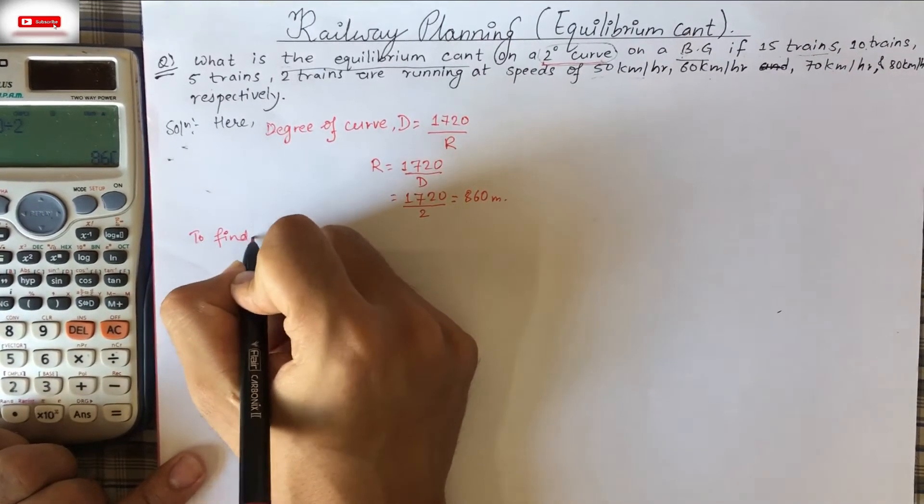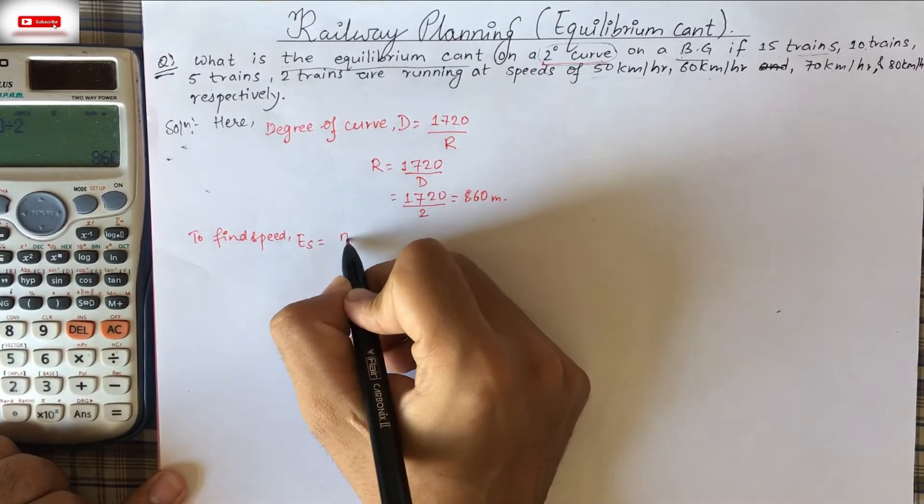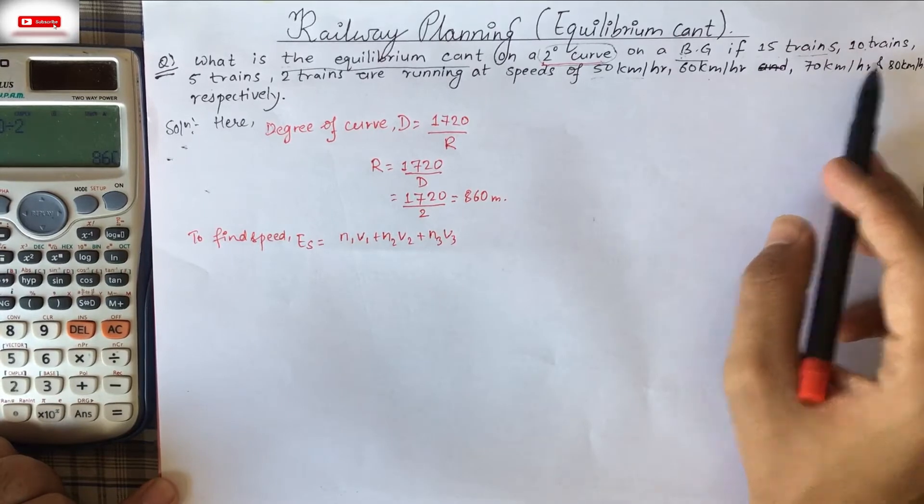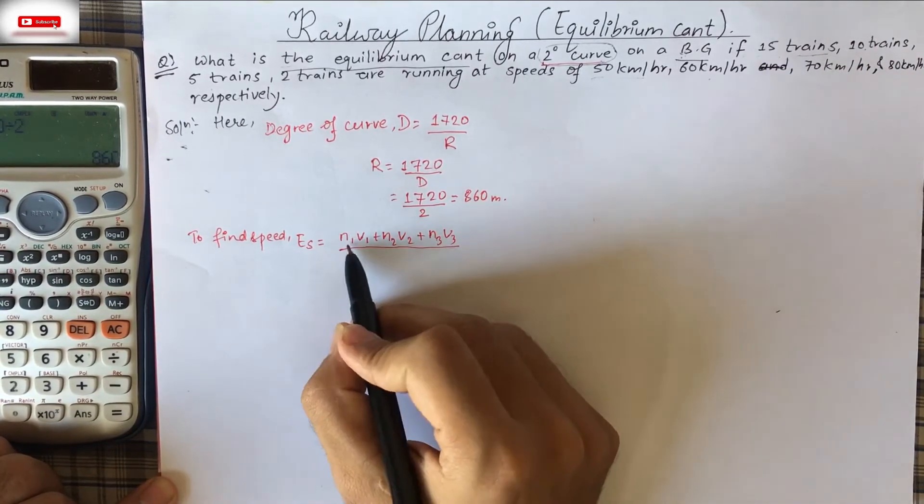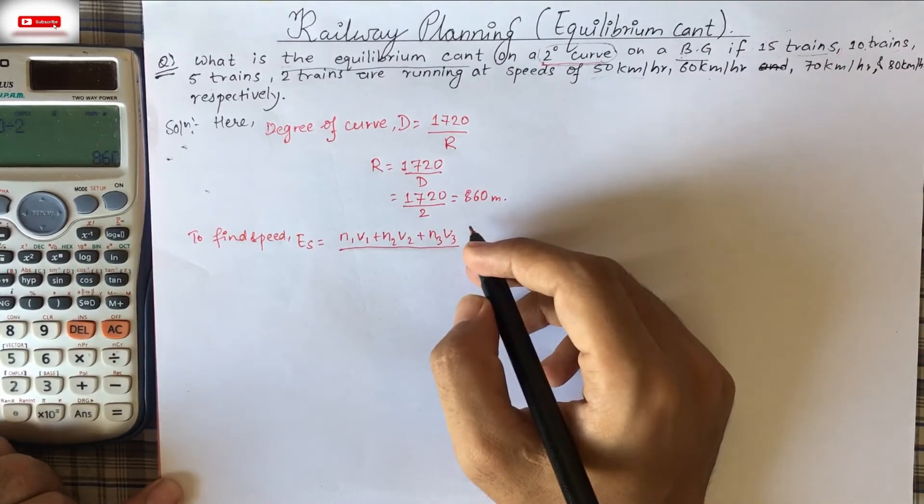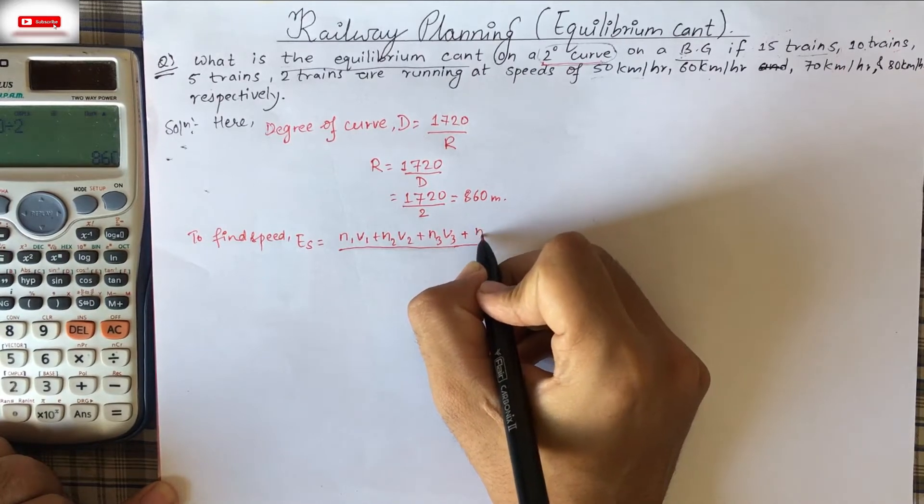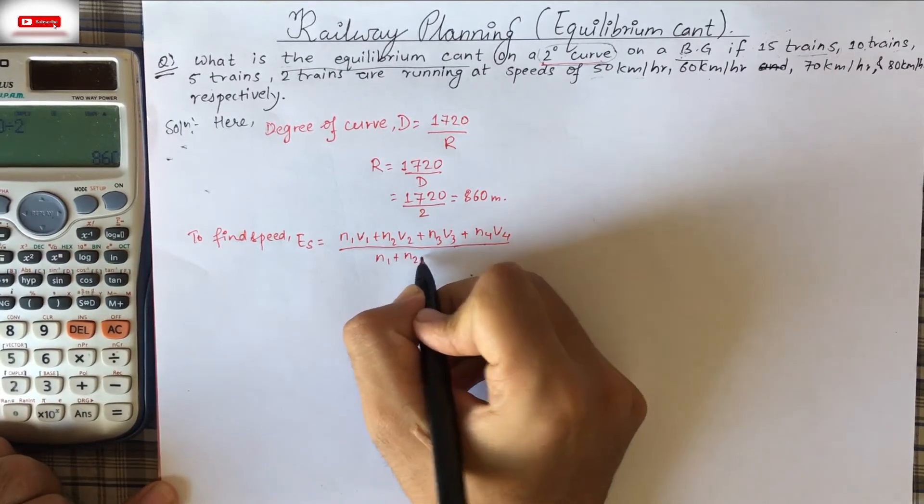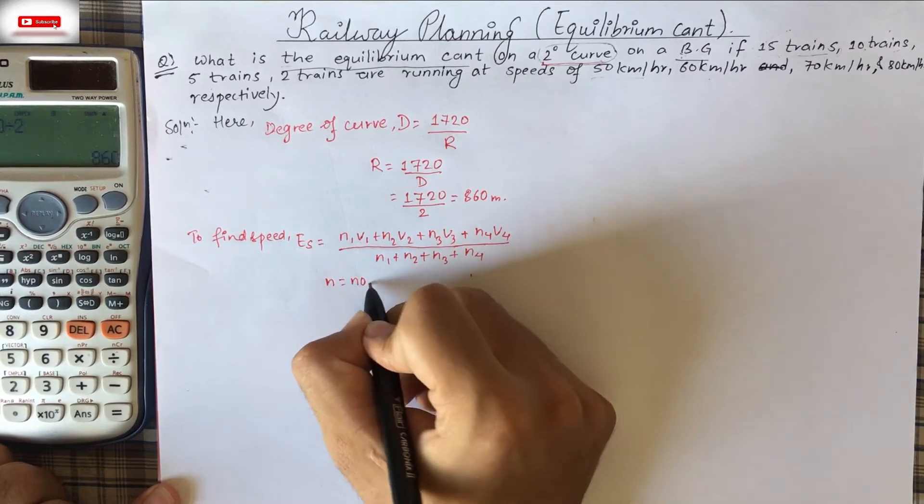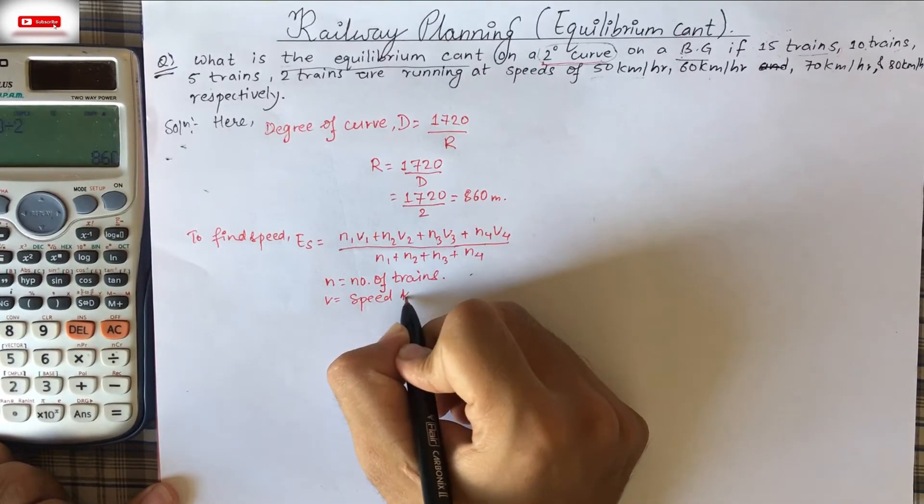Now, first of all we have to find is speed, to find speed ES. We have this simple formula: N1 V1 plus N2 V2 plus N3 V3. How many trains is given? So we'll write in that format. Three different trains like 15 trains is 1, 10 trains, 5 trains, 2 trains. In that same way, we'll calculate the value. So we can write N4 V4 and N1 plus N2 plus N3 plus N4. Here, N is nothing but simply a number of trains. And V means speed of a train that will be in kilometer per hour.